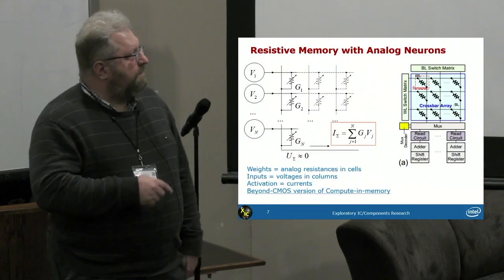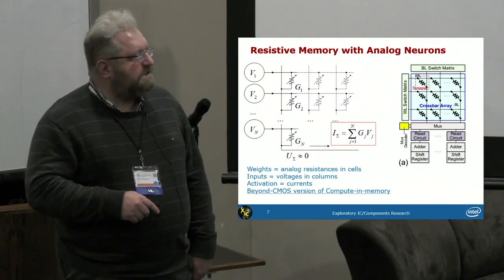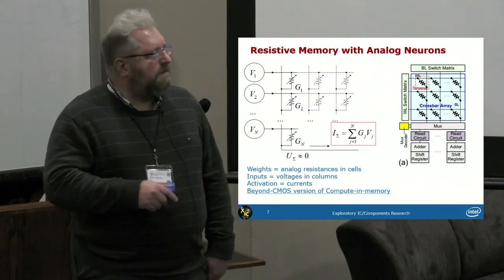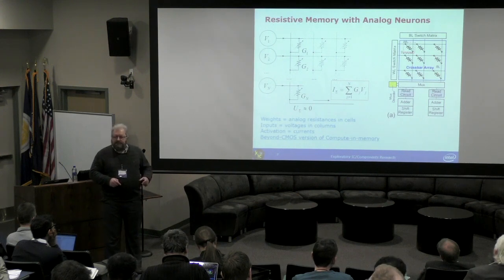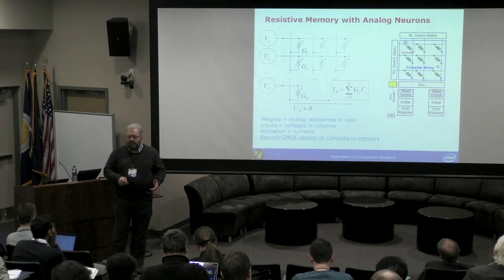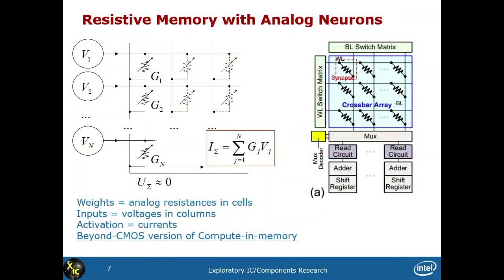Let's look at a few of them. One popular way is the crossbar of resistive elements or memristors, where at every crossing there is a resistor. The resistor can be represented by an oxide memristor, phase change memory, floating gate, magnetic RAM, and so forth. These are synapses, and the neurons are some kind of reading circuits — adders and shift registers. We look at how many transistors there are, what the critical path through them is, and estimate the time and energy required for operation.